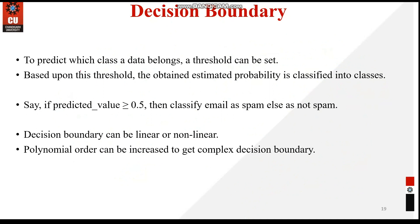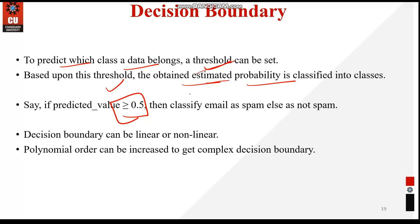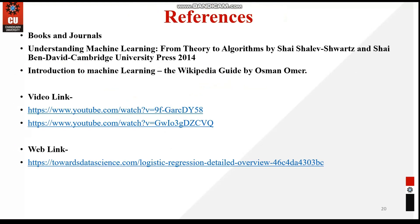In logistic regression, we use a decision boundary to predict which class the data belongs to, determined by the threshold value. Based on this threshold, the estimated probability is classified into different classes. For example, with a threshold of 0.5, any value below 0.5 is classified as 0 (no) and any value above 0.5 is classified as 1. This decision boundary can be in polynomial order, which can be increased to get more complex decision boundaries.